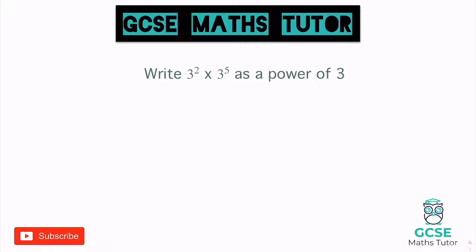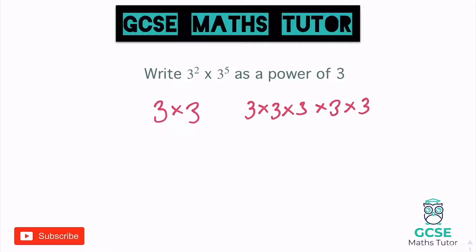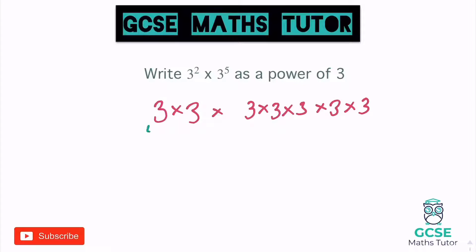Now this first one is when we're multiplying. Now there is a quick little rule for this, but I think it's important to understand why. So three squared is three times three. Now three to the power of five is three times three, five times — so three times three times three times three times three. What we're doing is we're timesing these both together. So really, if we have a look at that, what we've got is a load of threes getting times together.